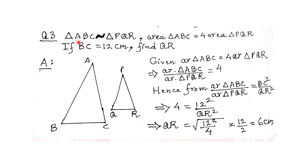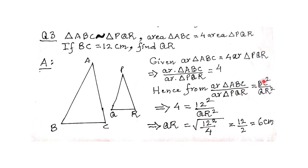Question number 3. Triangle ABC is similar to PQR. Area of ABC is equal to 4 times area of PQR, meaning the ratio is 4:1. If BC is equal to 12 cm, find QR. The formula gives: area of ABC / area of PQR = BC² / QR², so 4/1 = 12²/QR².